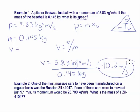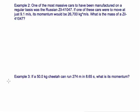Let's try another example. So example two says that one of the most massive cars to have been manufactured on a regular basis was a Russian car. If one of these cars were to move at just 9.1 meters per second, its momentum would be 26,700 kilograms times meters per second. What is the mass of this car?